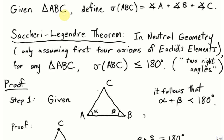For simplicity, we make the following definition. Given a triangle ABC, we define the angle sum — written sigma of ABC — to be the sum of the angles at A, B, and C. With this notation, the Saccheri-Legendre theorem states that for any triangle, the angle sum of ABC is less than or equal to 180 degrees, or as Euclid would have said, two right angles.